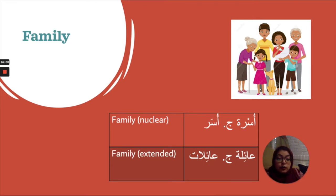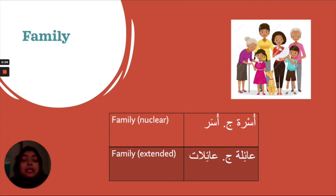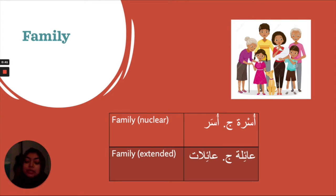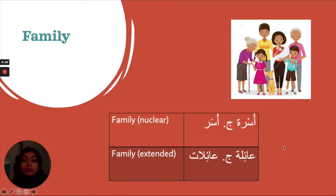Now let's move to the family category. We've done أسرة before — your nuclear family: الأم، الأب، أخ، أخت. أسرة, plural أُسَر, is a broken plural. Then we have عائلة — your extended family: cousins, uncles, aunts, grandparents, everyone outside your nuclear family. Plural: عائلات. Notice again جمع المؤنث — the feminine plural — a pattern we'll be looking at.